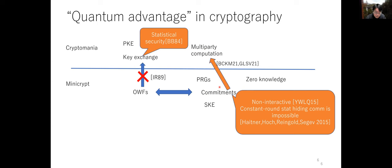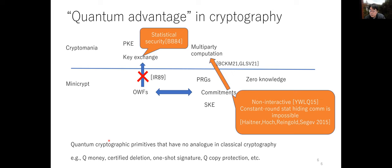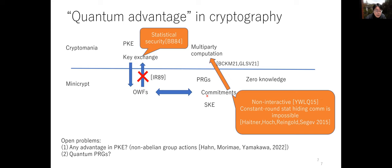In addition to these advantages, there are many new quantum cryptographic primitives with no classical analog, such as quantum money, which cannot be forged; certified deletion; one-shot signatures, where you can sign only once; and quantum copy protection. Quantum physics thus gives many nice advantages in cryptography.